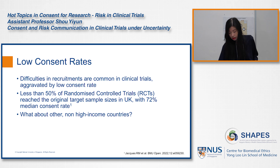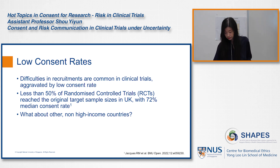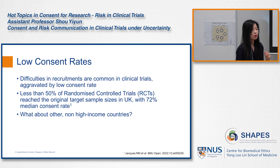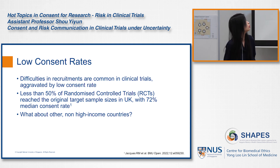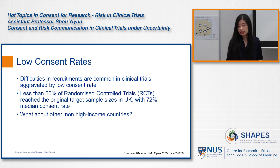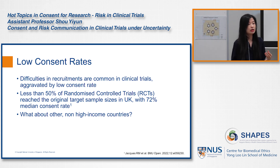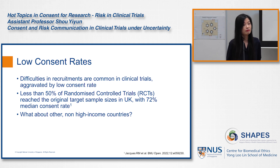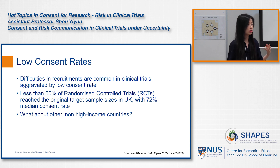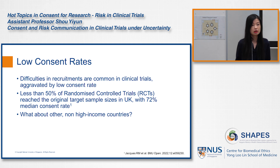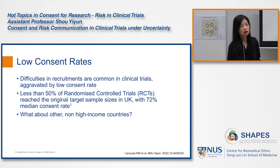Now let's start with the problem around low consent rates. It's widely known that there are a lot of difficulties in recruitment in clinical trials, and recruitment is already difficult enough. But if you also have very low consent rates—where two out of every few patients say no to your invitation—it's going to create a bigger problem in terms of reaching your target sample size.